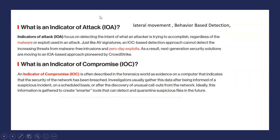So what is an Indicator of Attack? An Indicator of Attack is focused on detecting the intent of what an attacker is trying to accomplish, regardless of the malware or exploits used in an attack. For example: lateral movement happening in your network, someone trying to scan your network, someone trying to access your web portal by entering the wrong username and password, or someone trying to scan a particular IP for open ports. These are all information-gathering activities by an attacker.